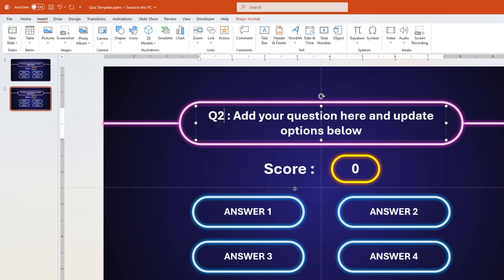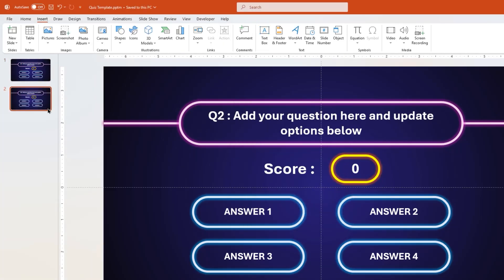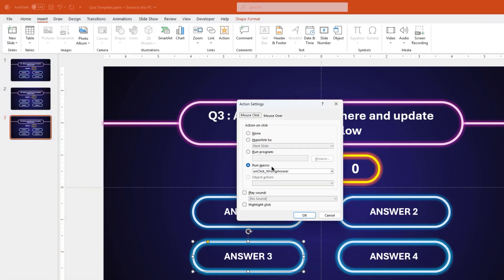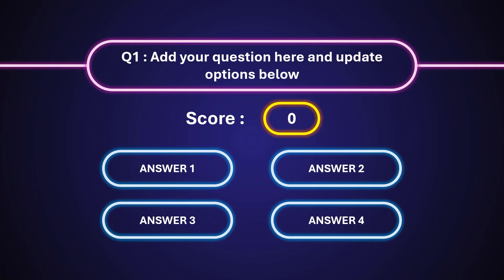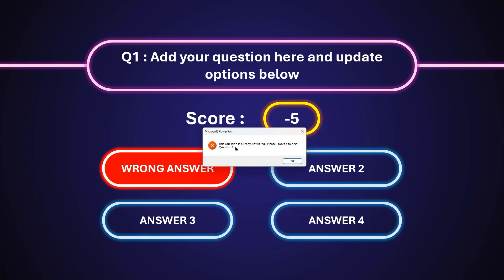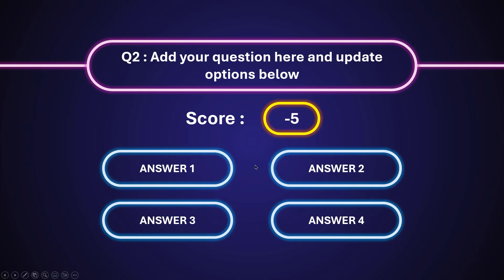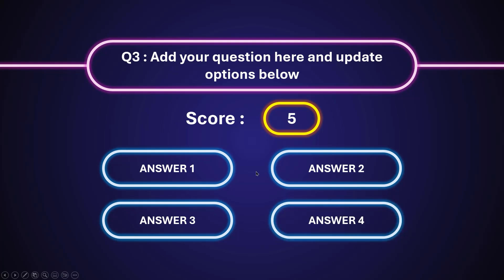Let's duplicate the first slide two more times and then change the macro assignment in each slide. So finally, let's see how this template works. On the first slide, the wrong answer gets formatted properly and the score gets updated as minus 5. We also get a message box on multiple selections. On the second slide, the correct answer gets formatted properly and the score gets updated as plus 5 by adding 10 points to the previous minus 5 value. And on slide 3, the score gets updated to 15 points. That's perfect.